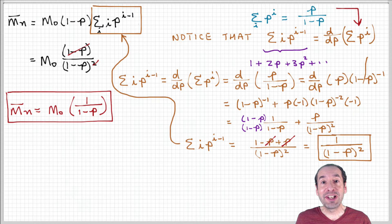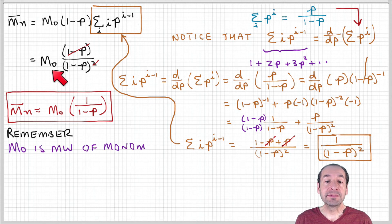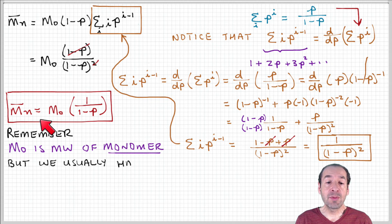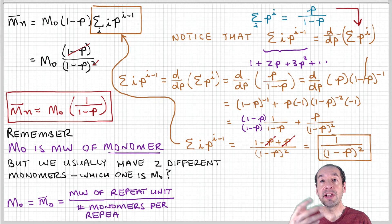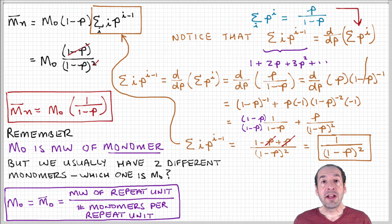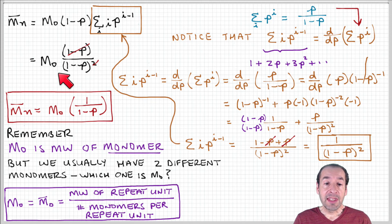Substituting in, the number average molecular weight equals M₀ times the ratio of one minus p over one minus p squared, which simplifies to M₀ over one minus p. So if we know the extent of reaction, we can calculate the number average molecular weight. An important point: what exactly is M₀? It is the molecular weight of the monomer, but for step-growth polymerization we have two different monomers with two different molecular weights.